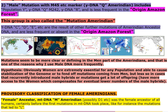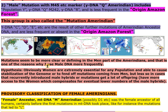Y-DNA C, D, E, etc. are the result of other further mutations of Amerindian ancestor DNA and are less frequent or absent in the origin Amazon forest. Mutations seem to be more clearly defining in the male part of the Amerindians, and that is one of the reasons why I use male DNA more frequently.